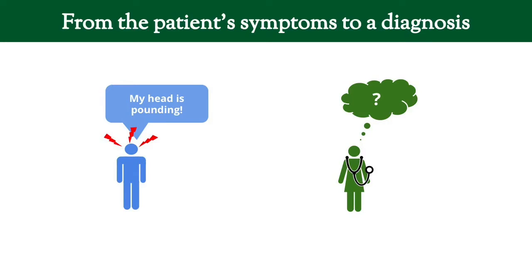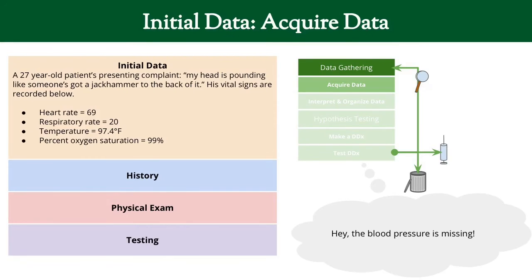That's the gentleman who came in whose head was pounding. Our initial data was recorded on the nurse's intake sheet. He's a 27-year-old gentleman complaining that his head is pounding like someone's got a jackhammer to the back of it. They checked his heart rate — 69, normal — respiratory rate, 20, his temperature, and oxygen saturation at 100%. Part of acquiring data is knowing what data to get, and we realize one thing is missing: we need the blood pressure.